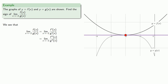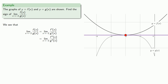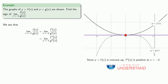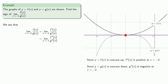We need to know something about the second derivative — remember, the second derivative algebraically corresponds to the geometric feature of the concavity of the graph. Since y equals f of x is concave up, the second derivative will be positive at x equals negative 2. Since the graph of y equals g of x is concave down, the second derivative will be negative at x equals negative 2. And so this quotient of the second derivatives will also be negative.